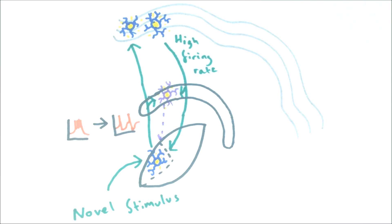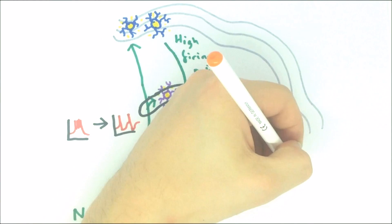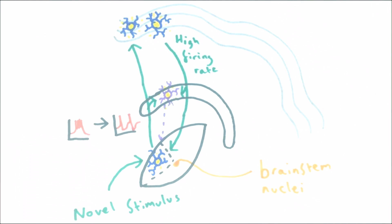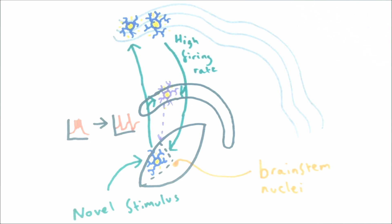The brainstem nuclei project more diffusely and are probably involved in globally regulating the balance between tonic and bursting modes depending on how awake or alert an animal is.